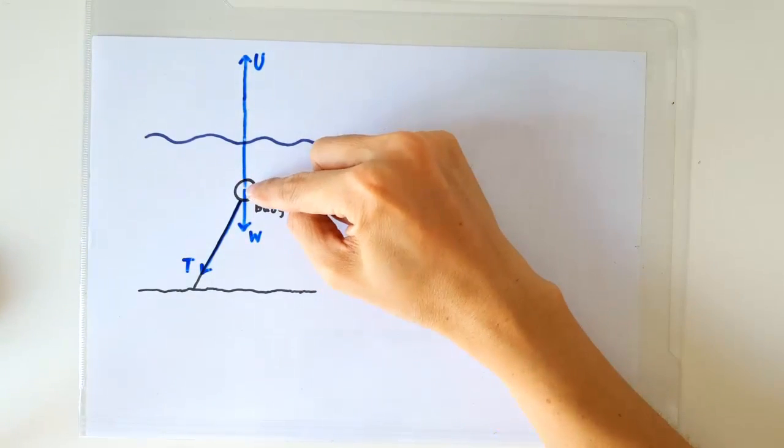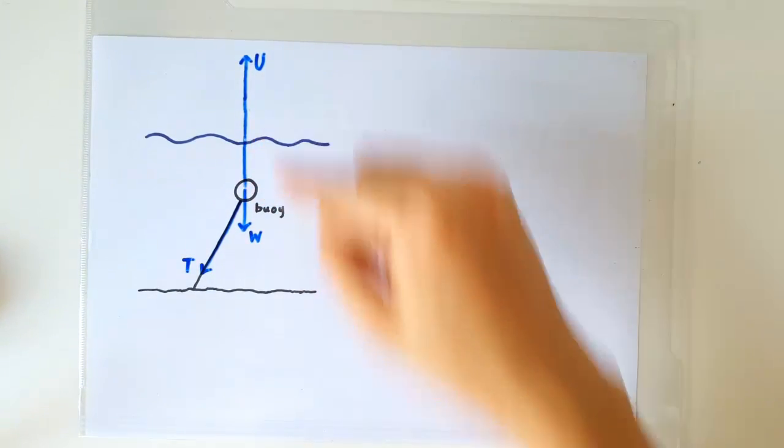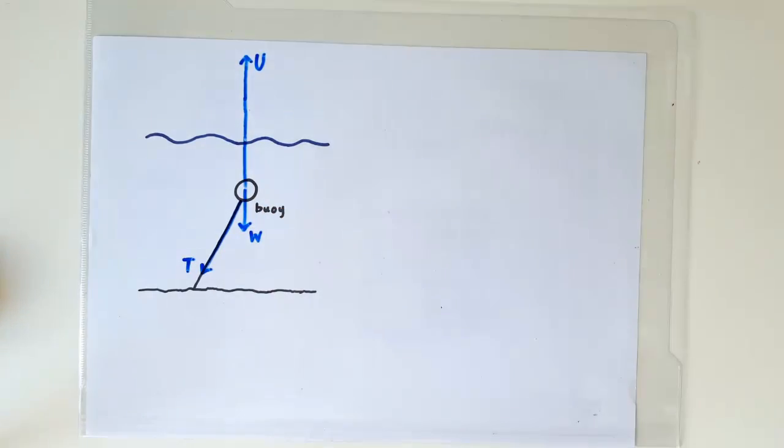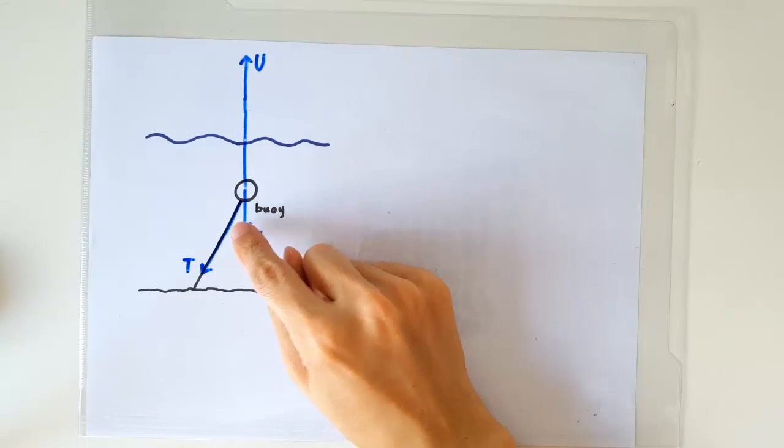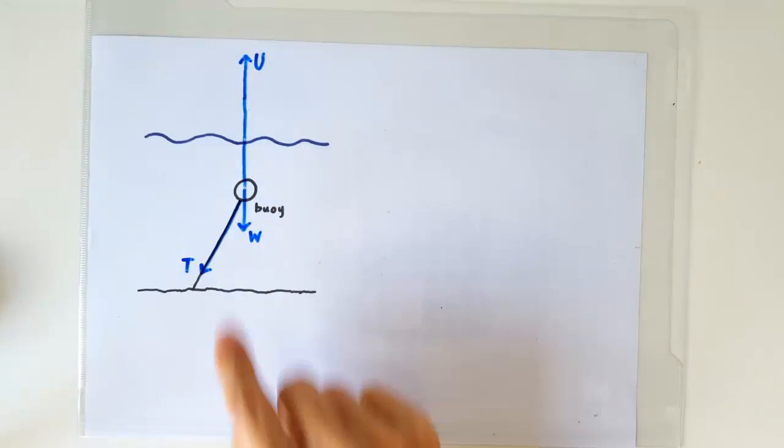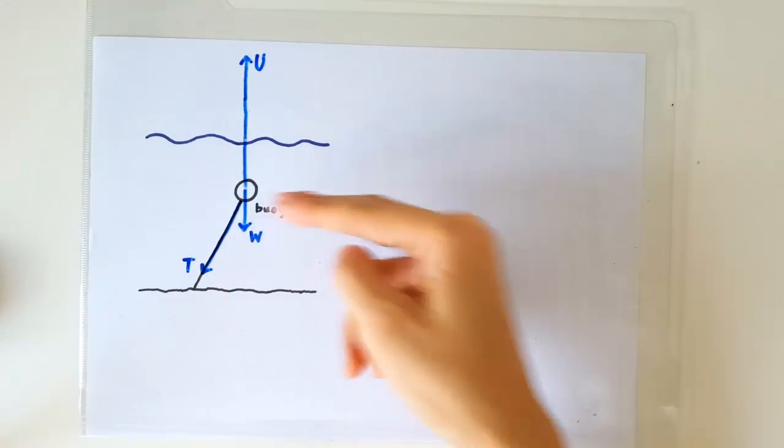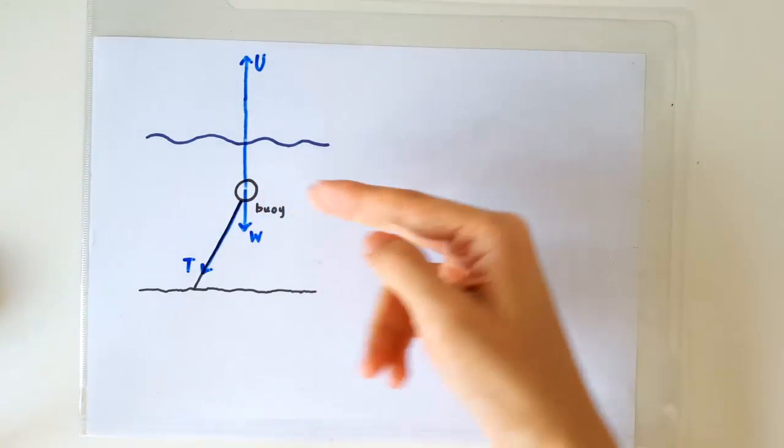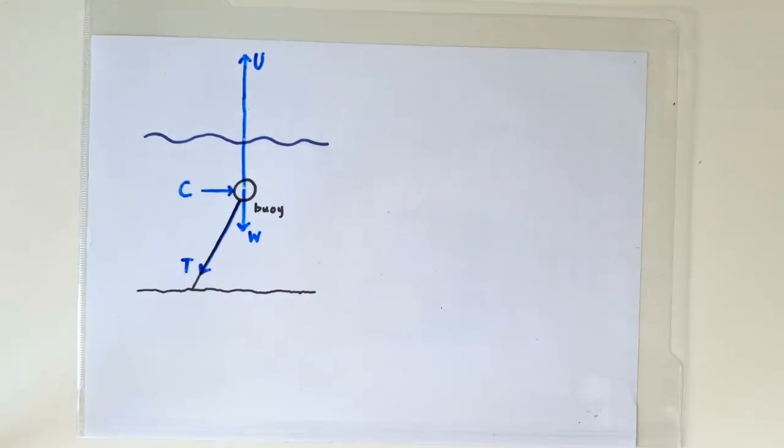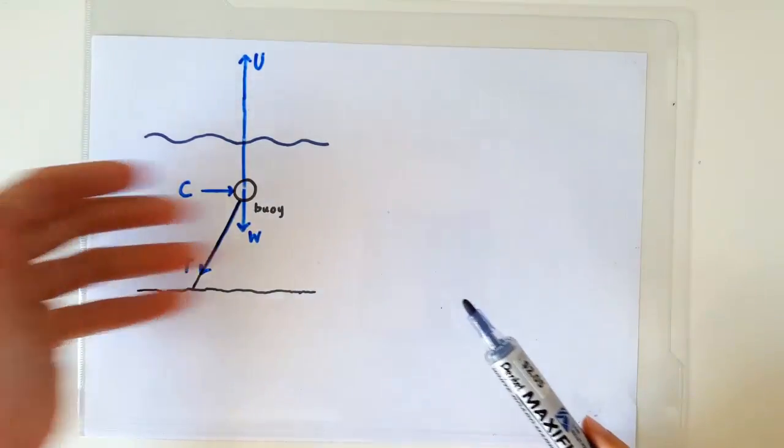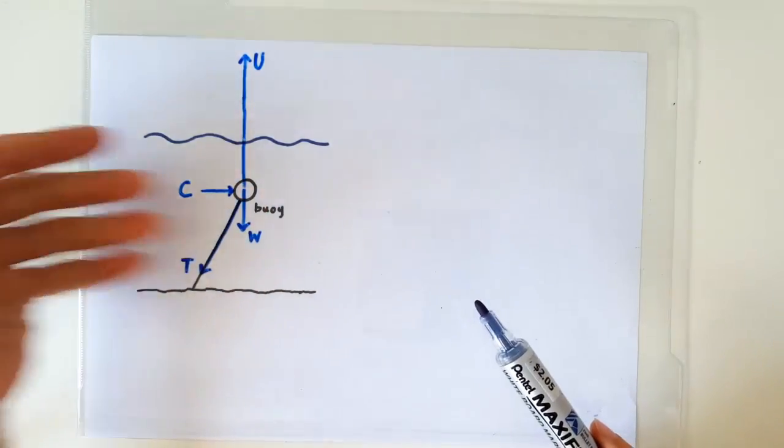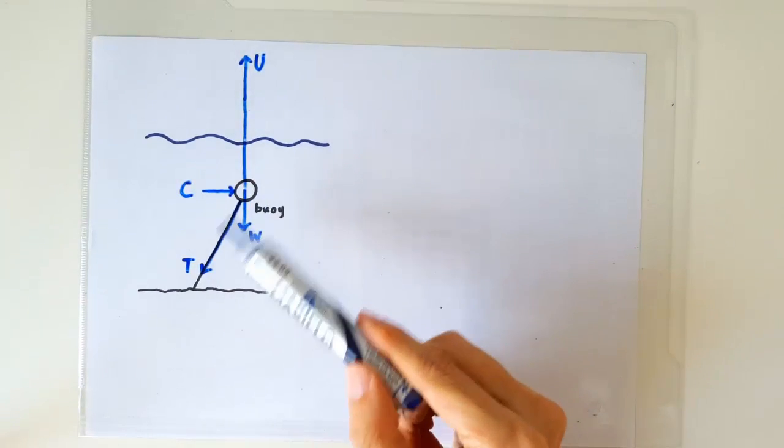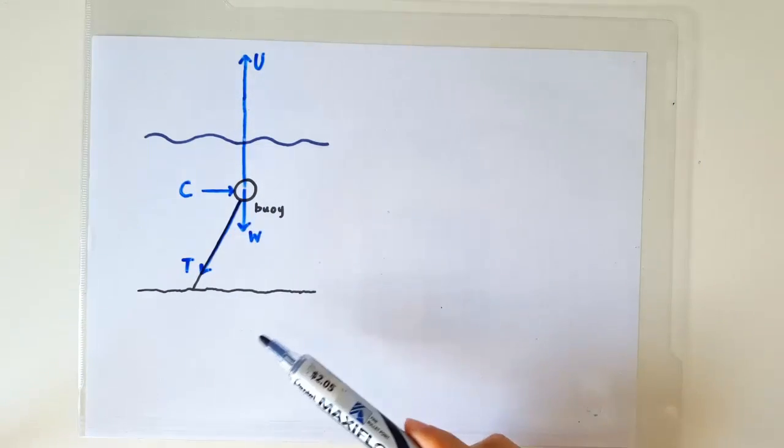Why isn't the buoy floating towards the water surface? It's because the tension in the rope is holding it down. Since the tension acts along the rope, the tension now provides a leftward horizontal component. So why isn't the buoy accelerating towards the left? It must be because the water current is exerting a rightward force on the buoy, which is the reason why the rope is slanted in the first place.